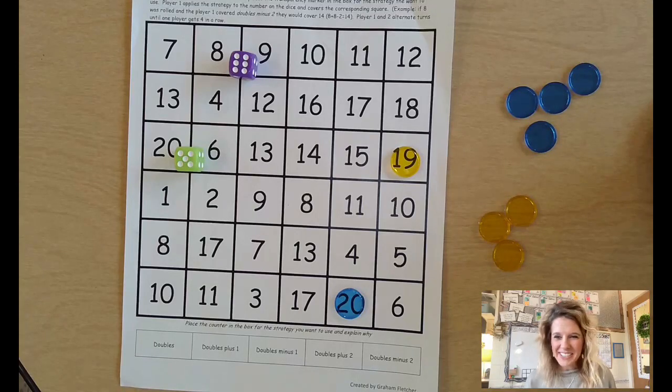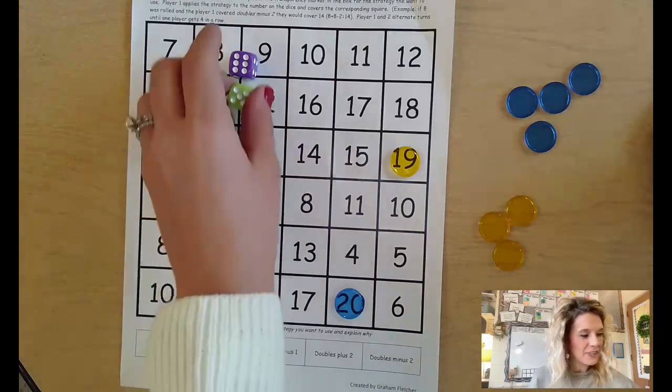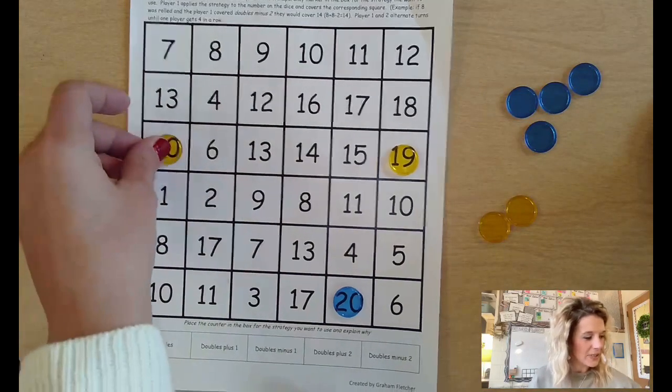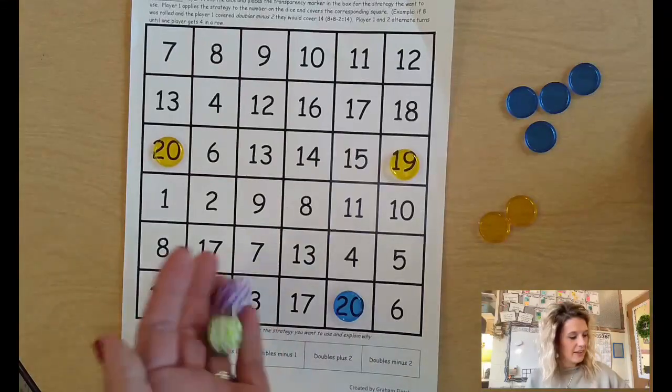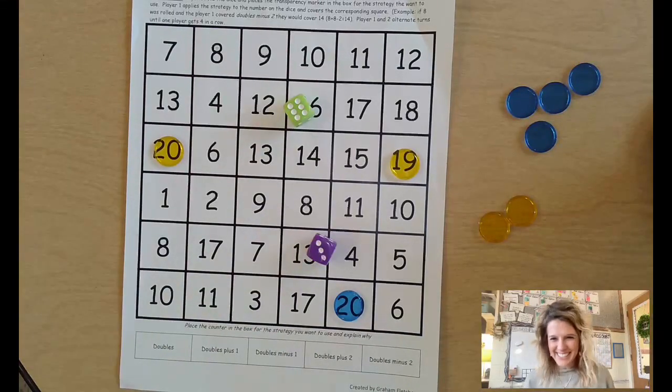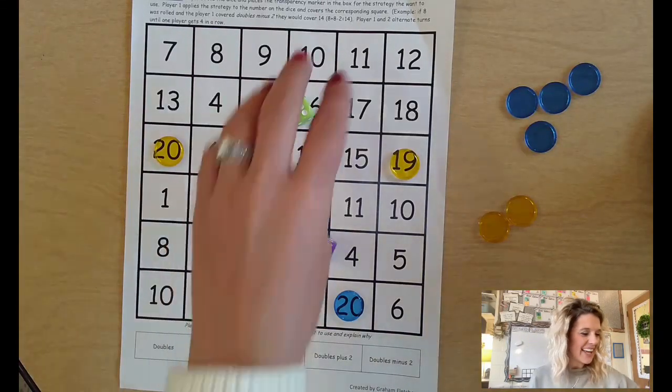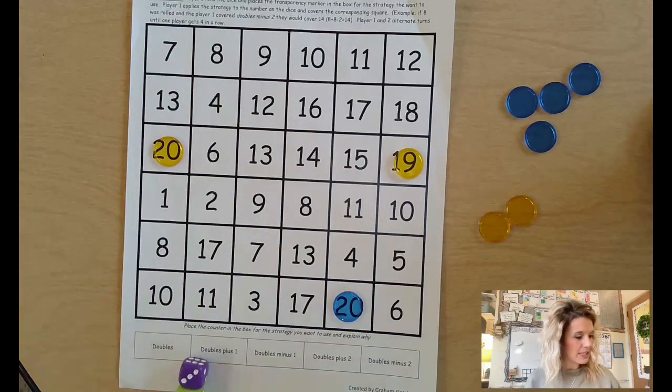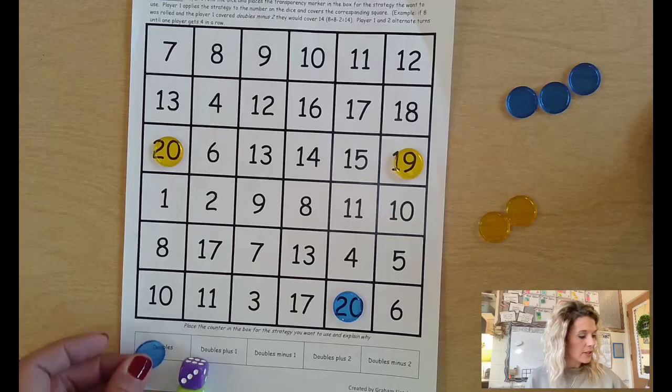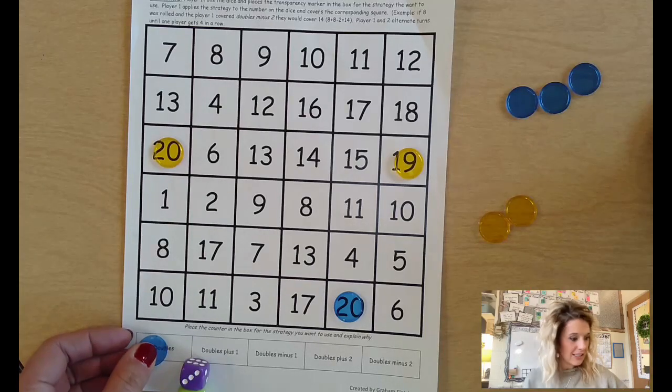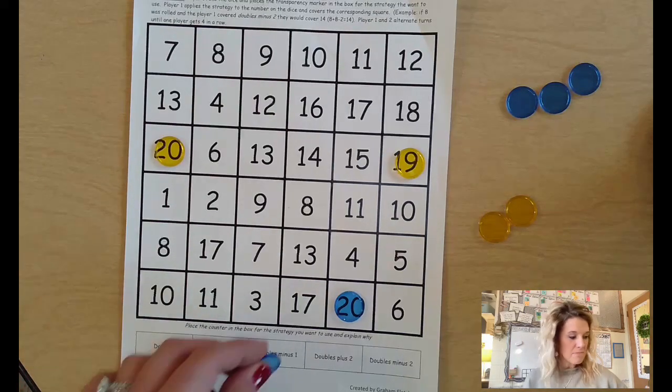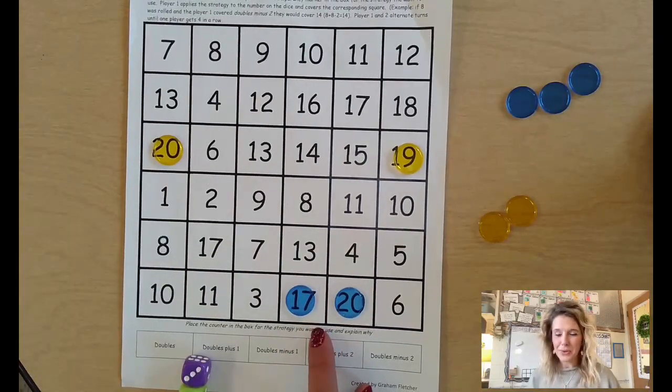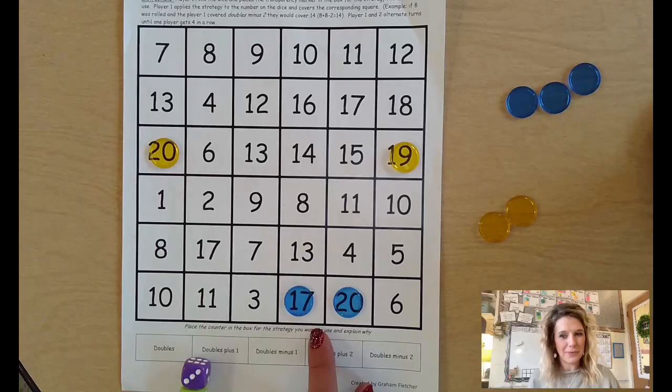Five and six, 11. I can use the strategies that player two just used and know that I'm also going to take a 20. Six and three, nine. I could use what player one used on their strategy, but this time I might choose doubles, which was 18, minus one to get 17 so I can go in a row. Because remember, the goal of the game is to get four in a row.